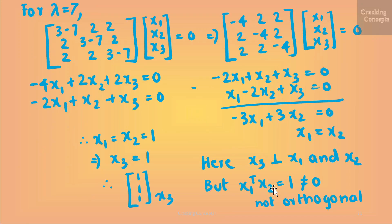Next, for the case where lambda = 7, substituting into the determinant format I get the following equations. Taking the equations of the first two rows and simplifying gives x1 = x2. Inserting the value 1 for both, I get x3 = 1. So the third eigenvector is [1, 1, 1].